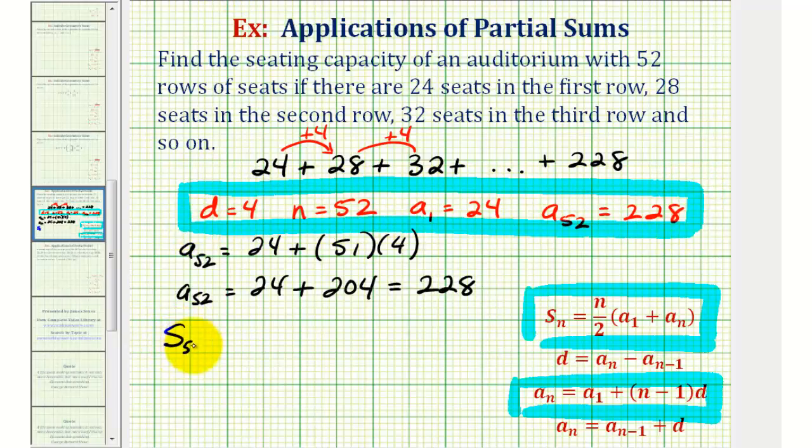S₅₂ is going to be equal to 52 divided by two times the quantity a₁ plus aₙ, or in this case, 24 plus 228. 52 divided by two is 26, and 24 plus 228 is equal to 252.